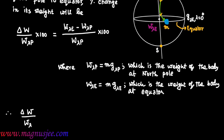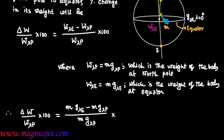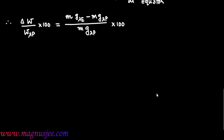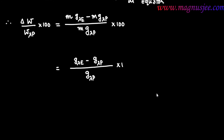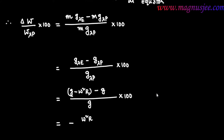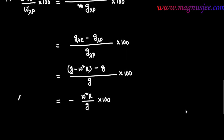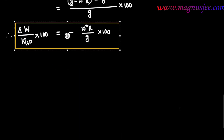Therefore, the percentage change in weight: delta w divided by w lambda p into 100 equals (mg lambda e minus mg lambda p) divided by mg lambda p into 100, which equals (g lambda e minus g lambda p) divided by g lambda p into 100, cancelling the mass from numerator and denominator. Putting the expressions of g lambda e and g lambda p, we get: (g minus omega squared r minus g) divided by g into 100, which equals minus omega squared r divided by g into 100. That is the percentage change in weight of the body.